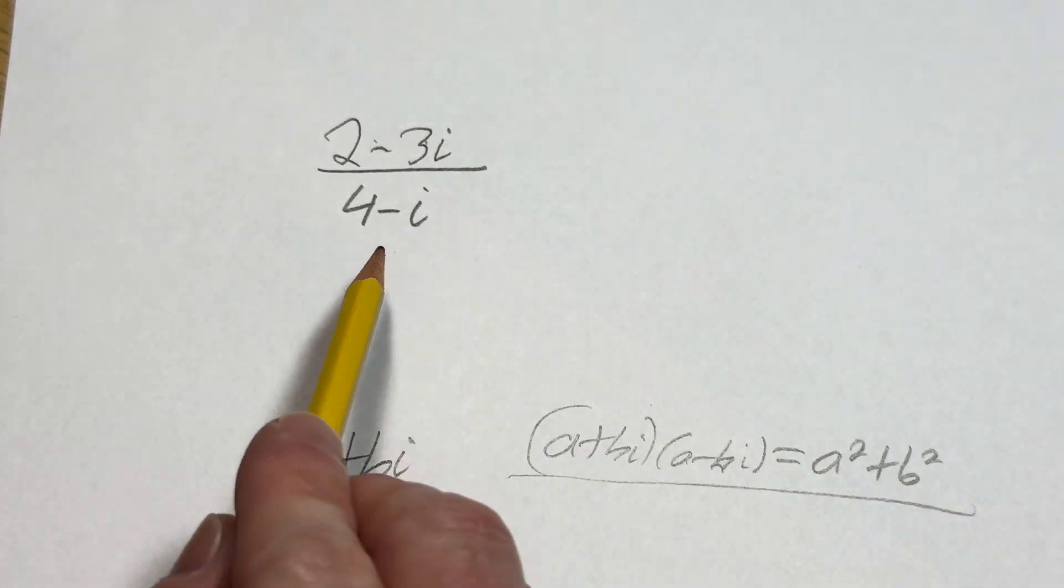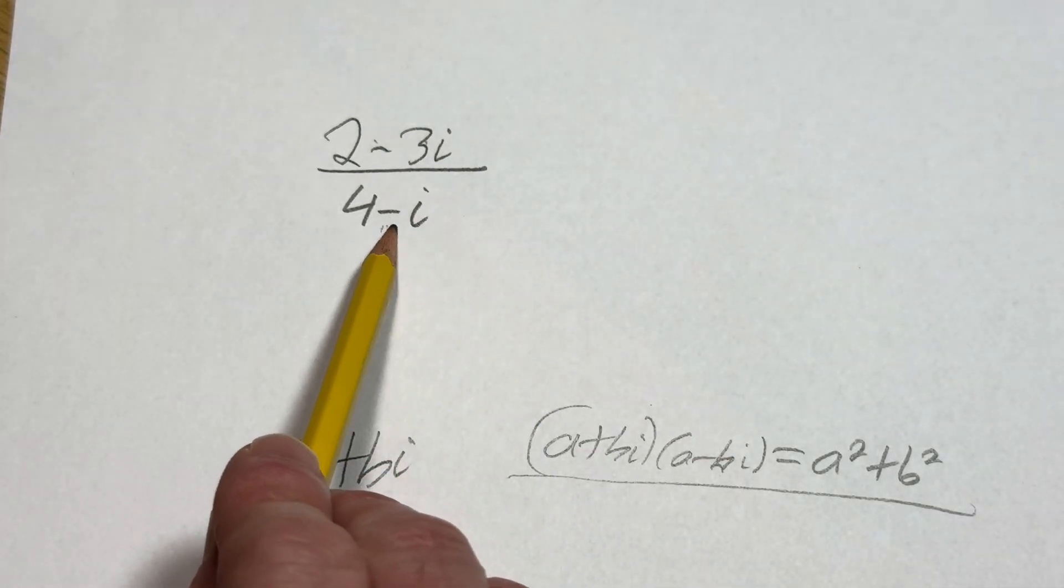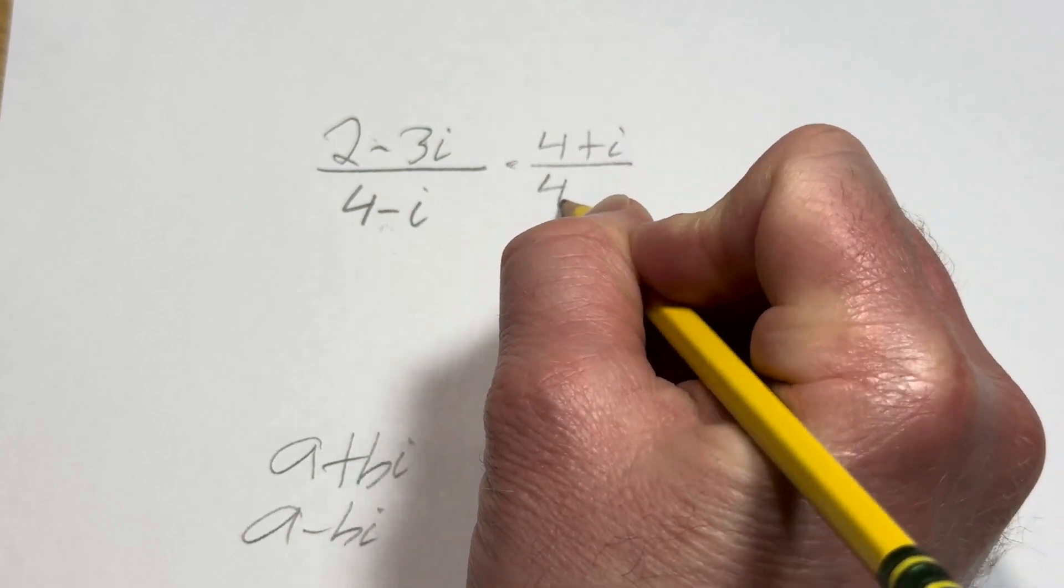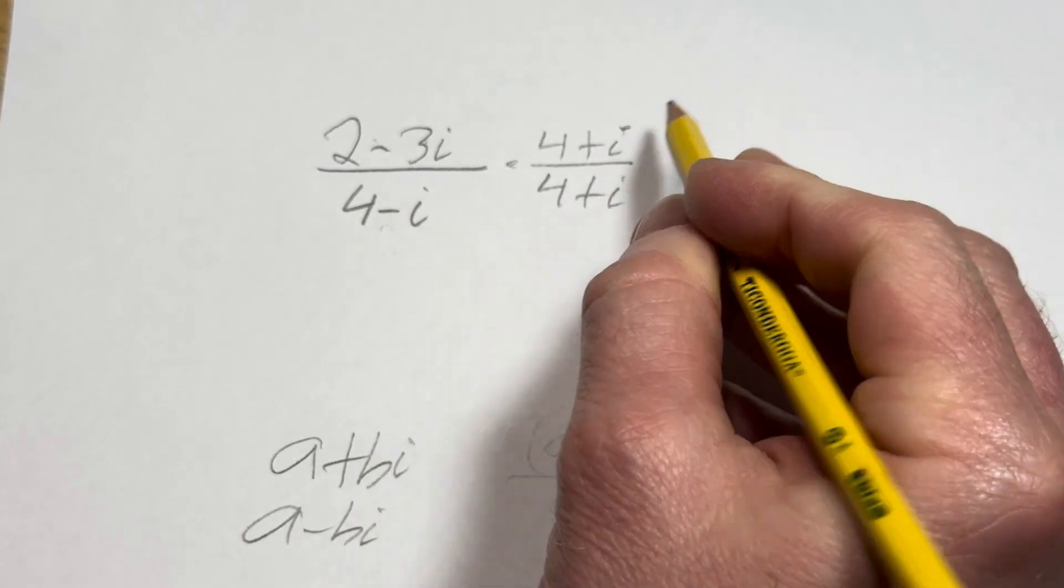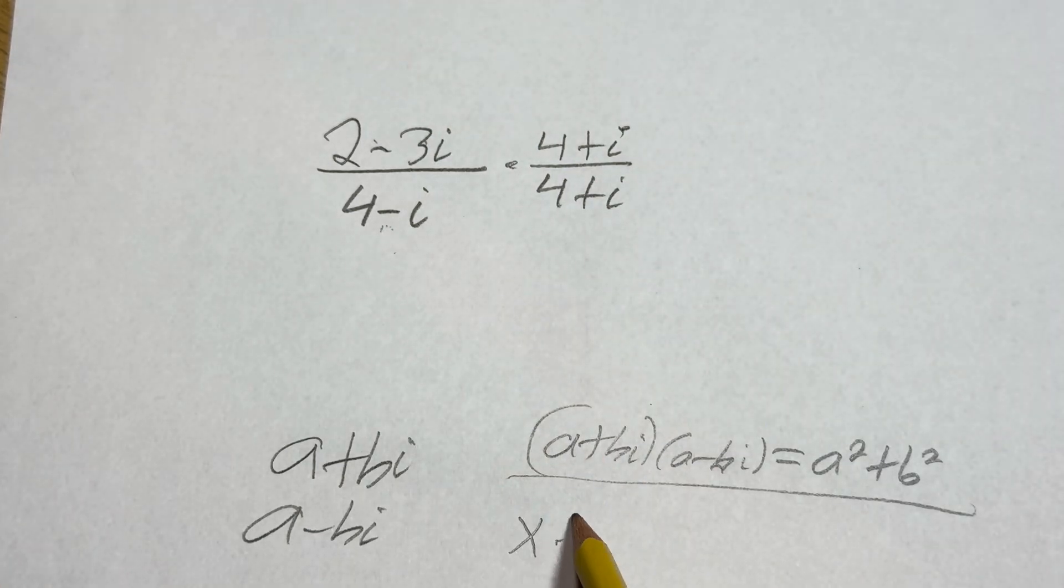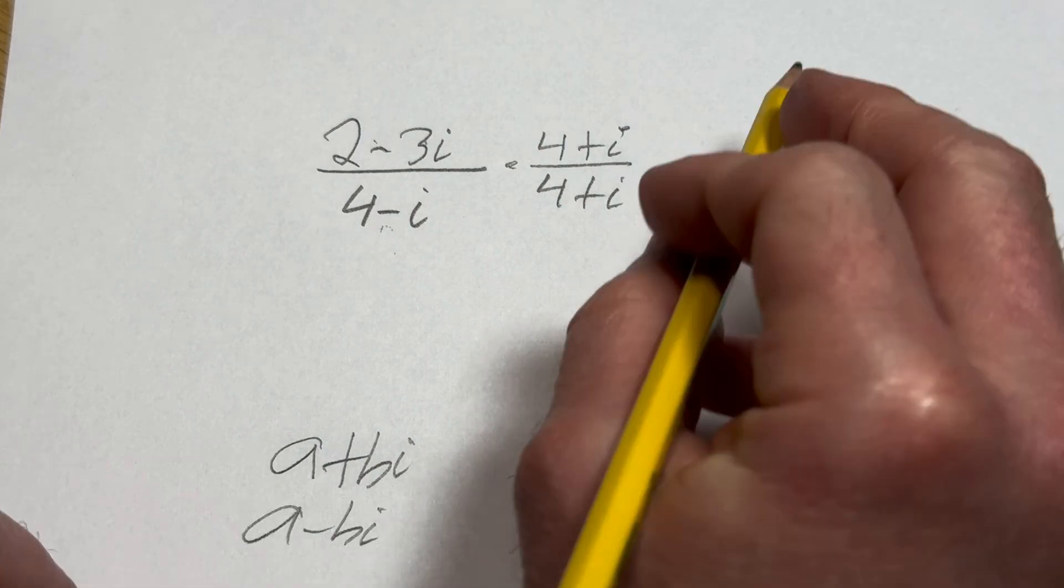So here we're going to start by multiplying by the conjugate of the denominator. So 4 plus i over 4 plus i. We're basically multiplying it by 1. That's allowed, right? You're allowed to multiply stuff by 1 because x times 1 is x.